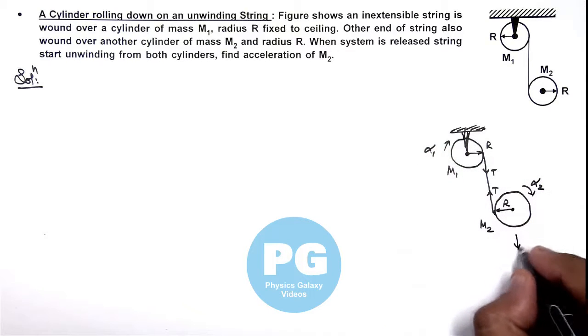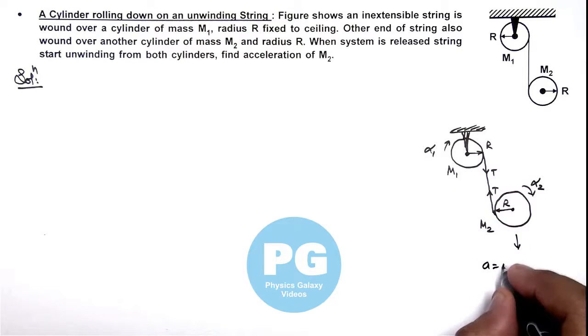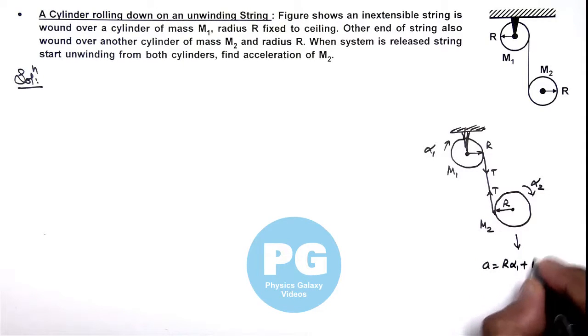So the linear acceleration of m2 we can write as R alpha 1 plus R alpha 2.